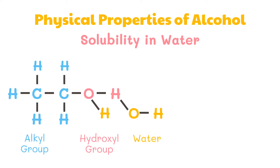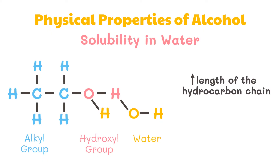Alcohols are soluble in water. This is due to the hydroxyl group in the alcohol that is able to form hydrogen bonds with water molecules. Alcohols with a smaller hydrocarbon chain are very soluble. As the length of the hydrocarbon chain increases, the solubility in water decreases, because it requires more energy to overcome the hydrogen bonds between the alcohol molecules, since the molecules are more tightly packed together as the size and mass increases.